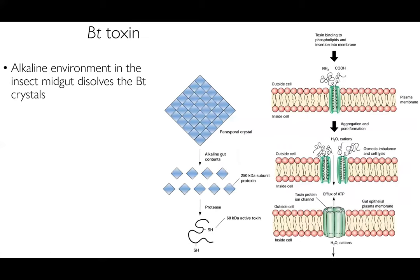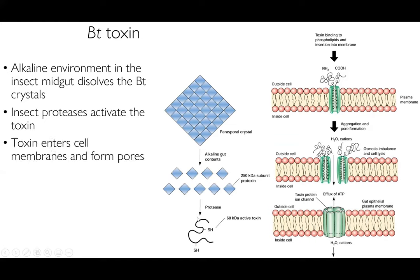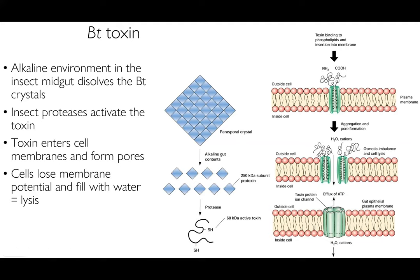The mechanism works as follows: in an alkaline environment, the insect midgut dissolves the Bt crystals. Most insect guts are alkaline, meaning pH above seven. This dissolves the crystals into smaller components, and the proteases of insects actually activate the toxin. The toxin then enters cell membranes and forms pores, splitting the cell membrane apart. The cells lose membrane potential and fill with water, causing them to lyse. That's the mechanism by which Bt toxins work — particularly cool.